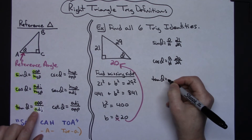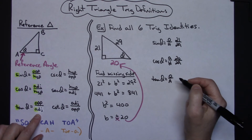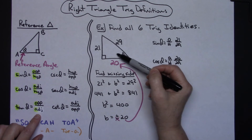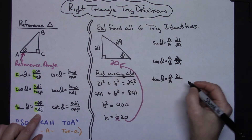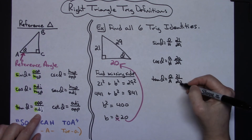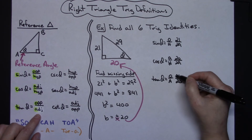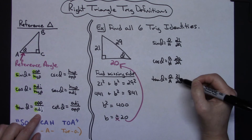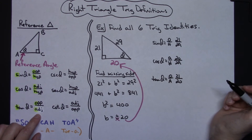Tangent theta is opposite over adjacent, so I write O over A. The side opposite the reference angle is 21, and the adjacent side is 20, so tangent of theta equals 21 over 20. If I could reduce this to lowest terms I would, but 21 over 20 is already in lowest terms. I do not want to turn that into a mixed number — I want to be able to see the opposite over adjacent relationship clearly.